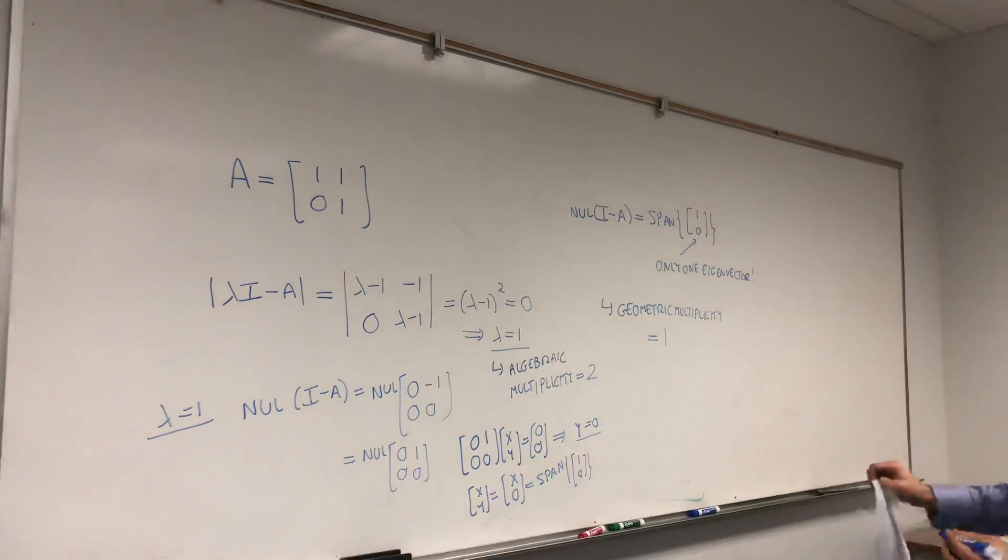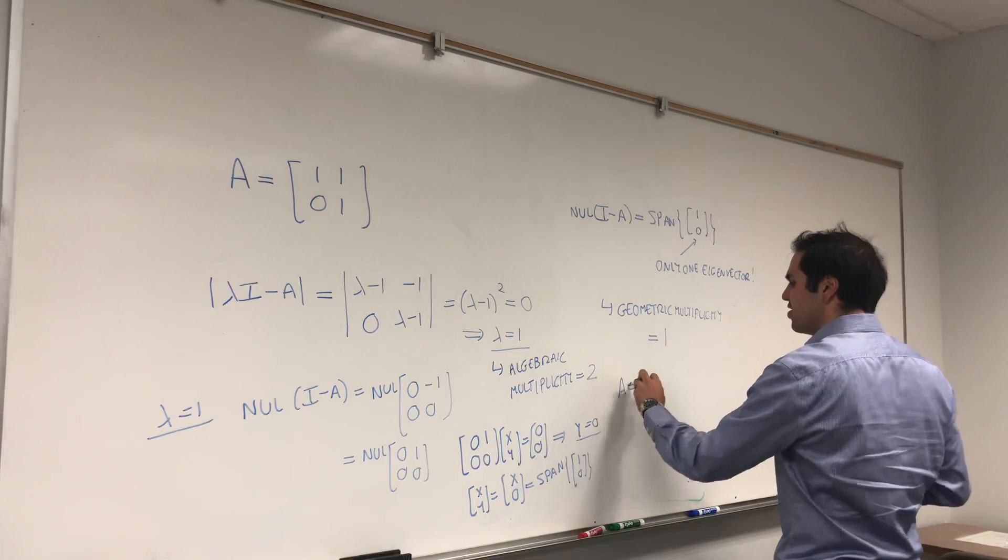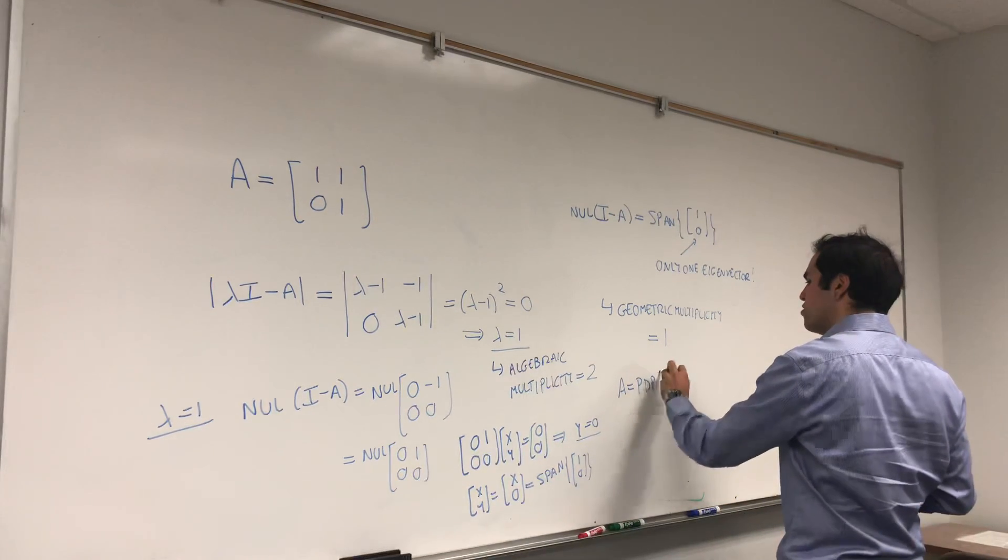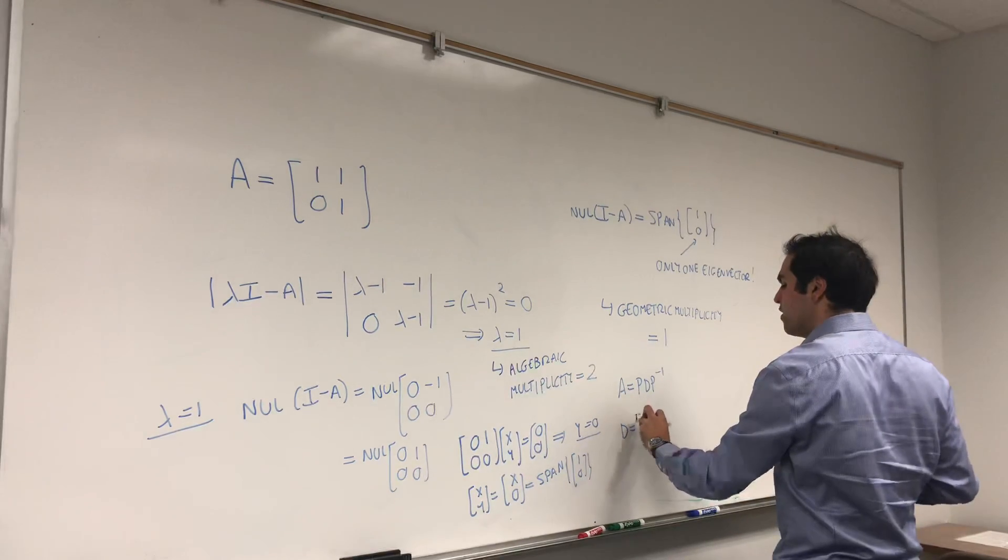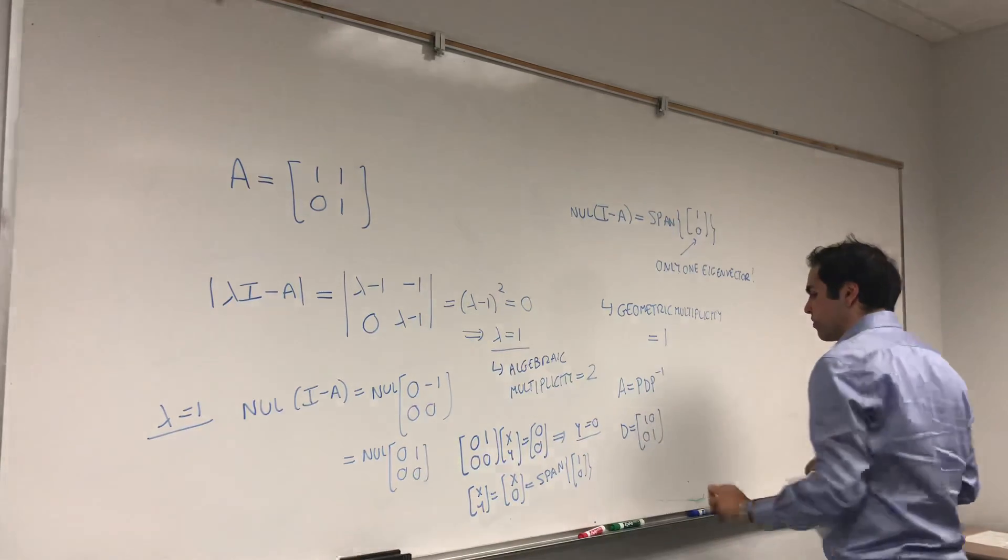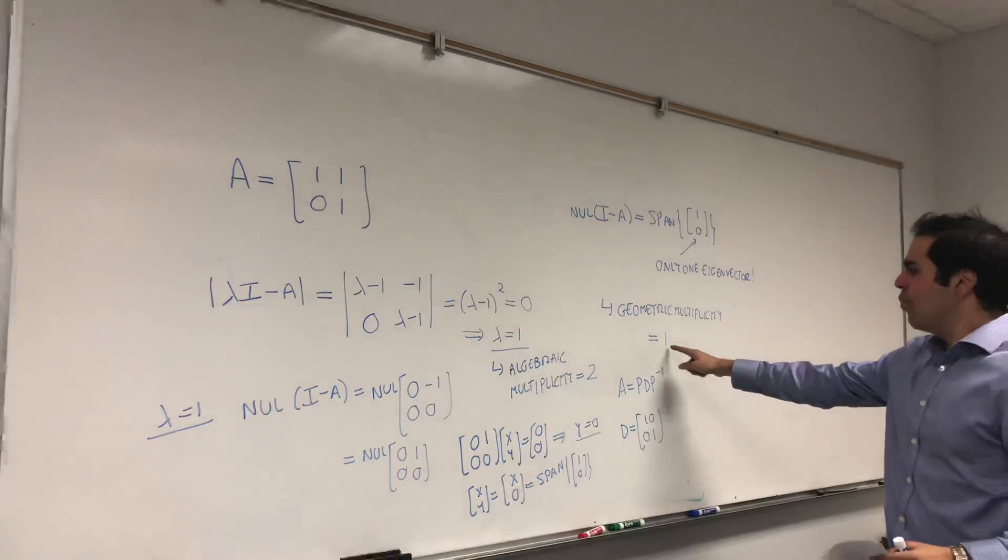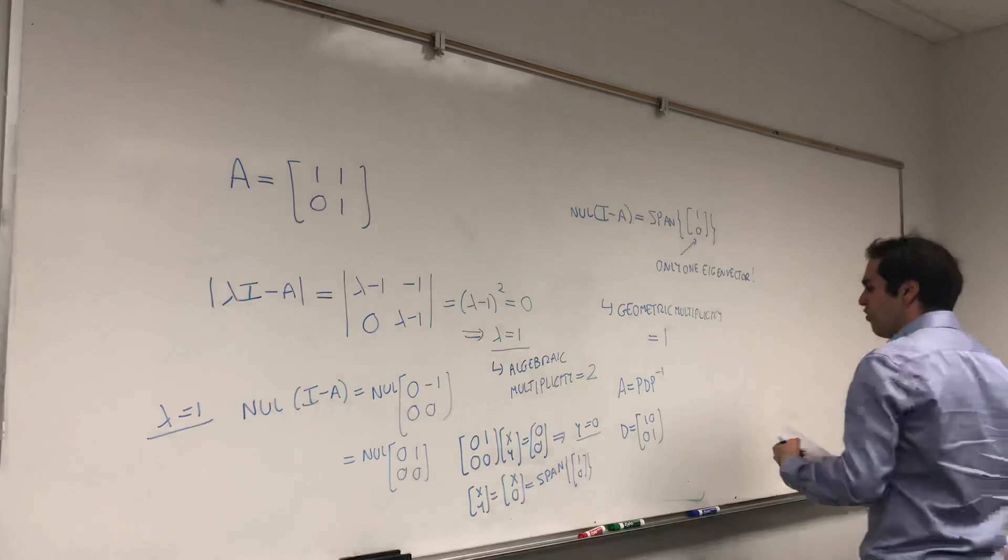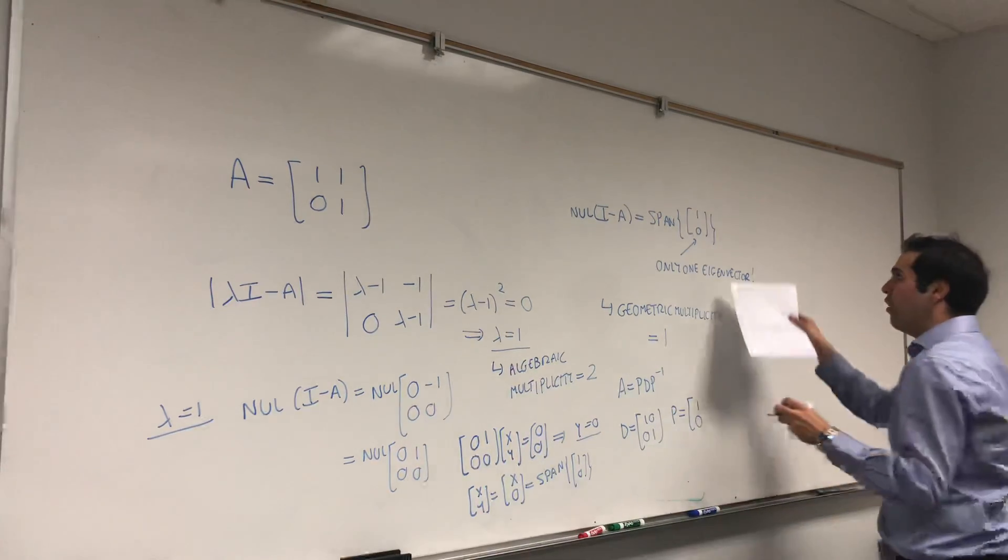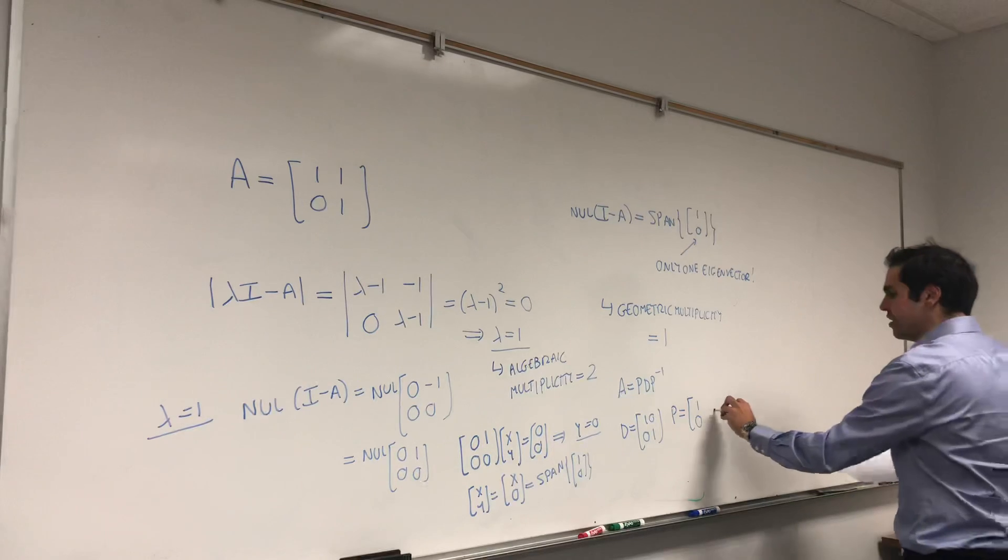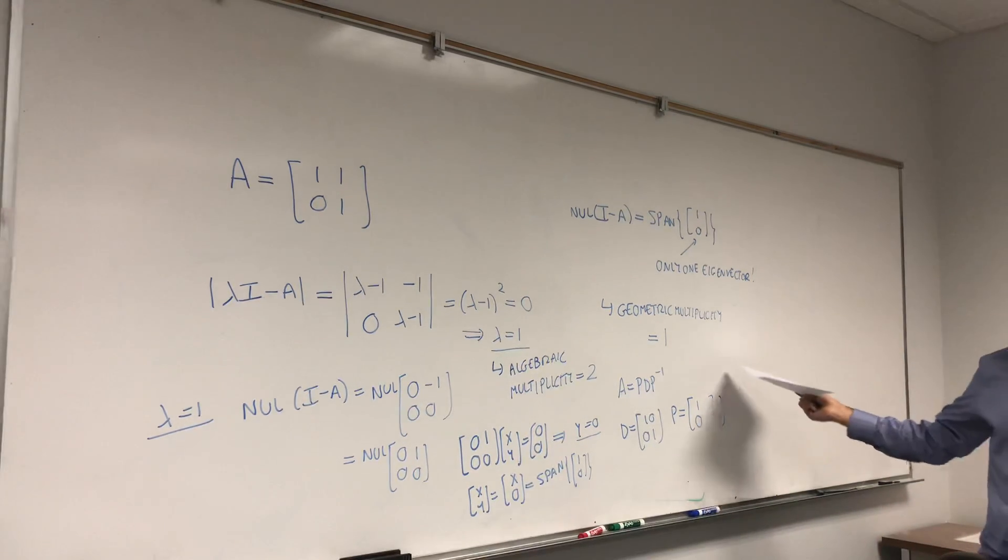And this is a big problem because what does it mean to be diagonalizable? You would have to find P and D such as A is PDP inverse. Well, D, the only choice you really have is 1, 0, 0, 1. But then the question is, what do you put for P? Well for P, you have 1, 0 because it's one eigenvector, but then you don't really have any other choices.